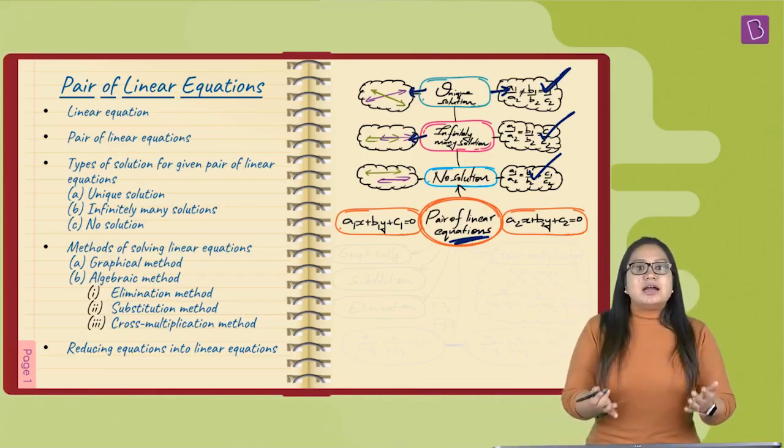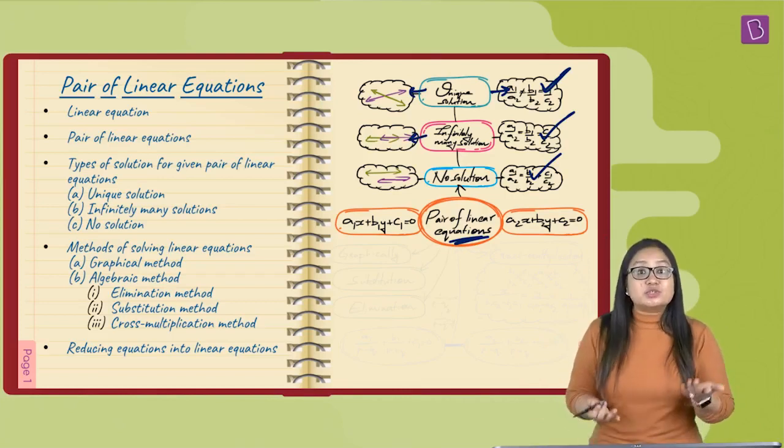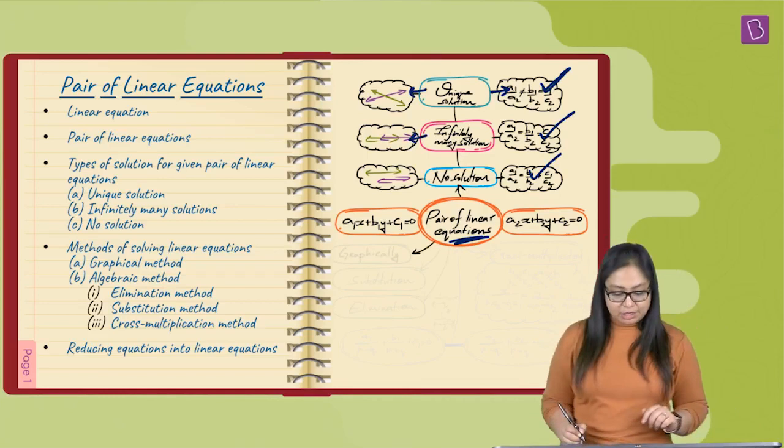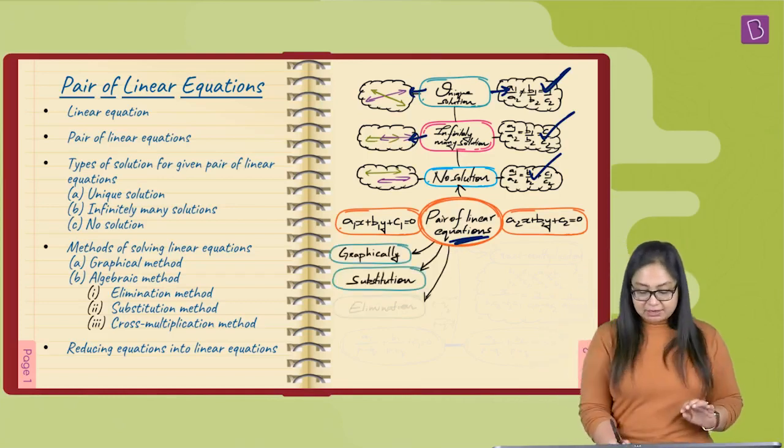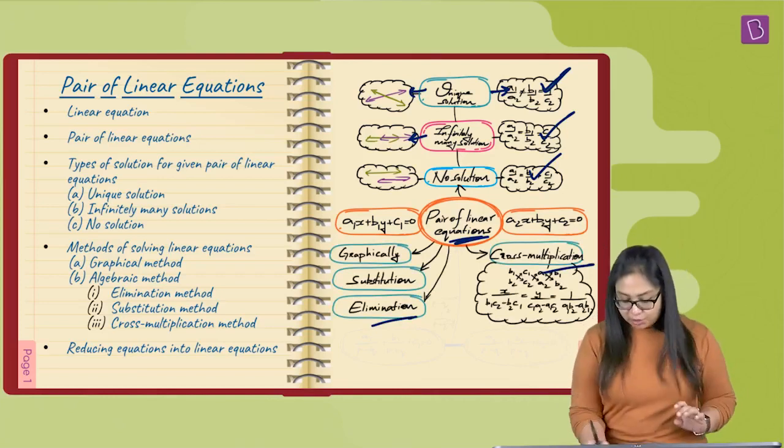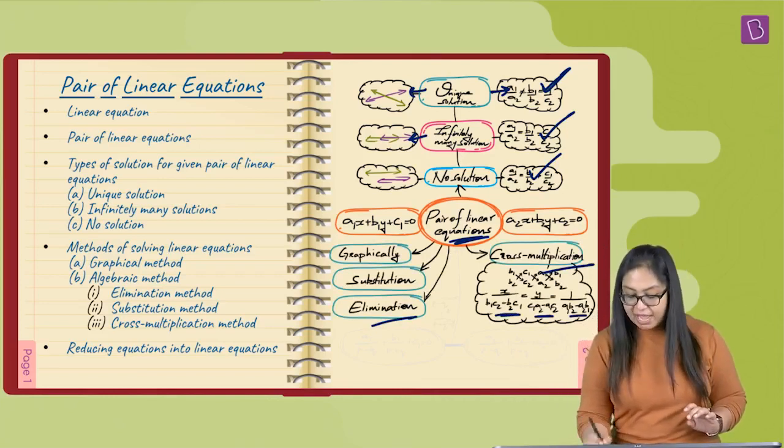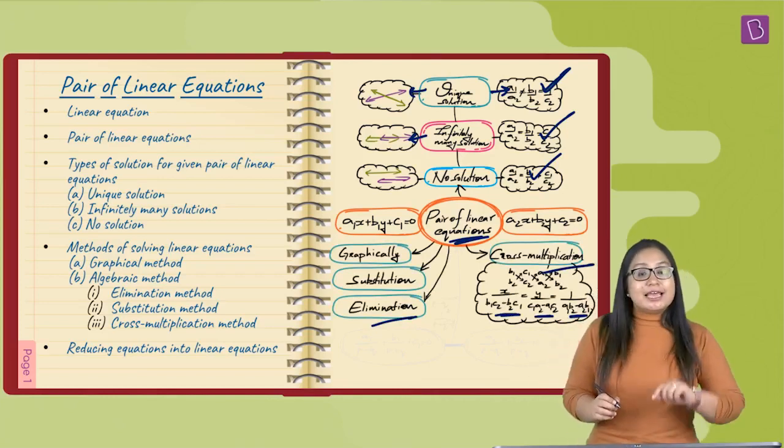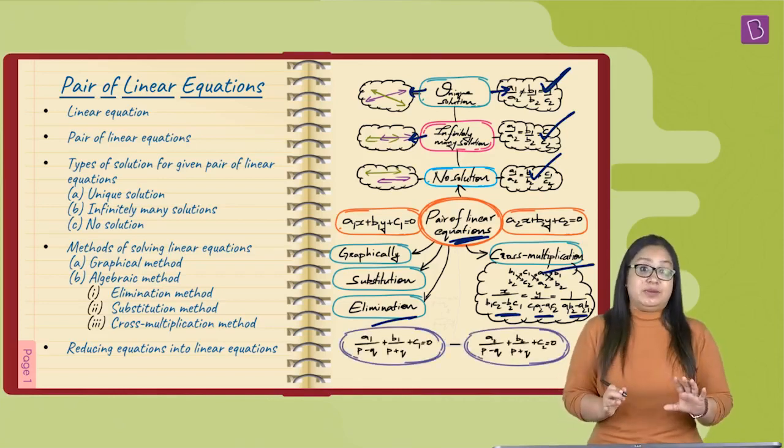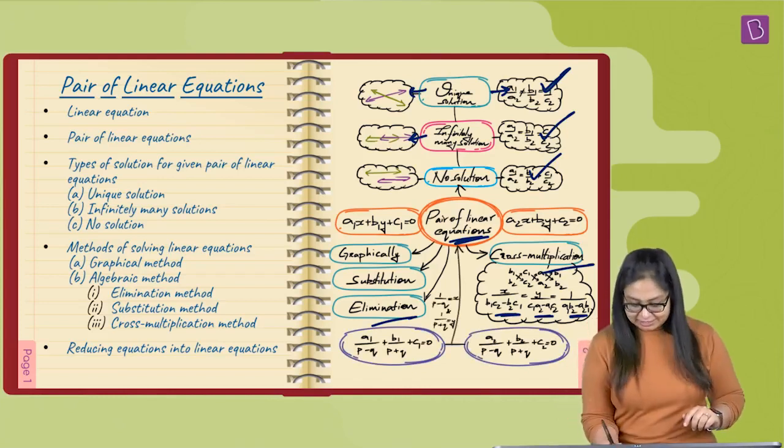Then, after that, there are three more methods of solving a linear equation in two variables. Yes, you've got substitution method, elimination method, and cross multiplication method. So, here we get the values of x and y from cross multiplication method and then we follow a method of reducing a pair of linear equations.